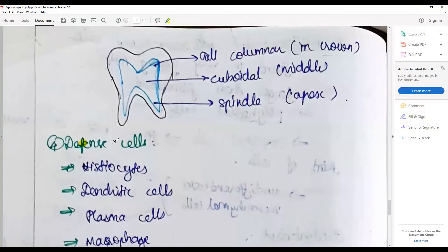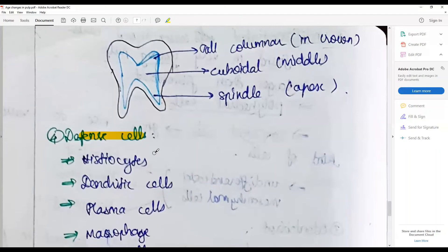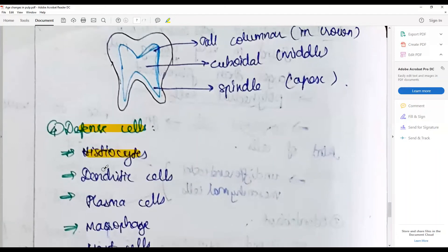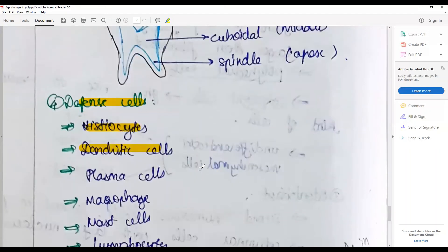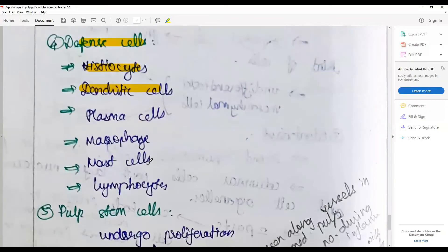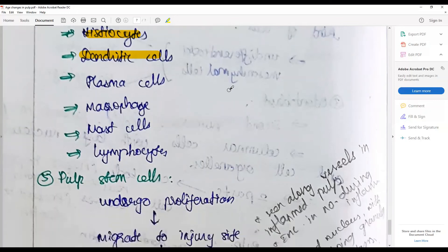Then we have different defense cells including histiocytes, dendritic cells, plasma cells, macrophages, mast cells, and lymphocytes, all exhibiting typical morphology that is found in other areas in human bodies and are associated with defense mechanisms.